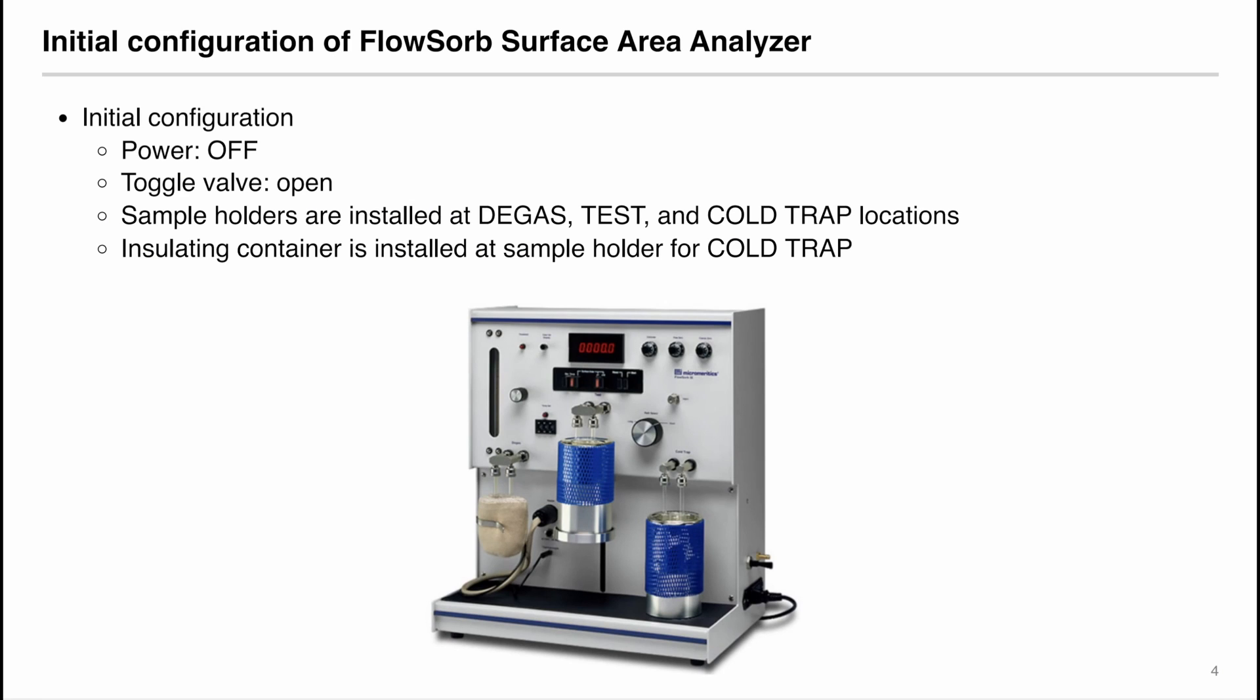The instrument that we're using in the lab is called the FlowSorb surface area analyzer. In the initial configuration, its power is off on the right side. Here is the power button. And the toggle valve should be on. Make sure that you identify the toggle valve and the power valve so they're in the correct positions. We will have sample holders, that is this kind of glass tube, that are installed at the degas, test, and cold trap locations.